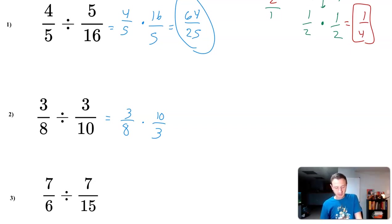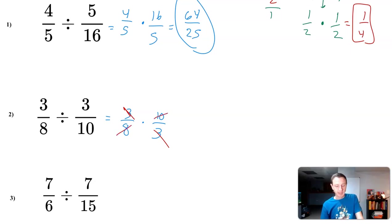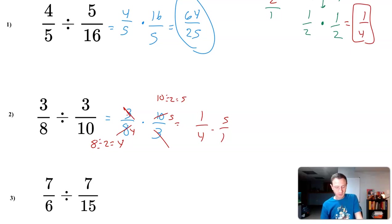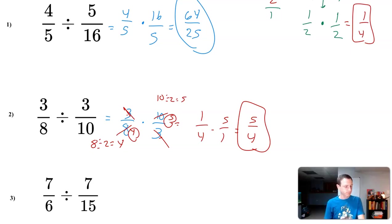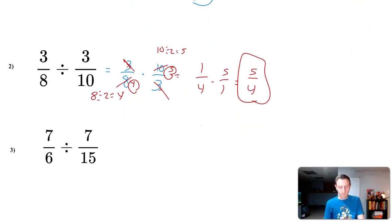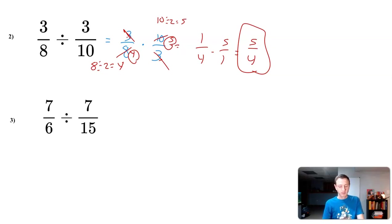Now I can simplify. I have a three on top and a three on bottom — those cancel to one. Then I have eight and ten. Eight doesn't go into ten, but two goes into both eight and ten. So eight divided by two is four, and ten divided by two is five. That gives one over four times five over one. Multiplying across: five times one is five, four times one is four — so I get five fourths.